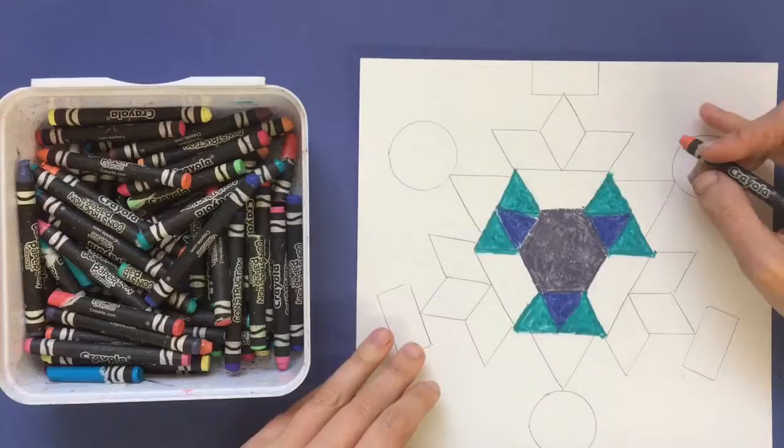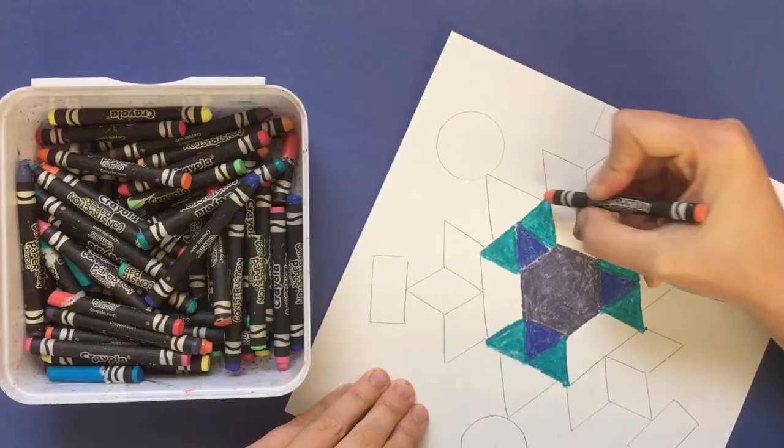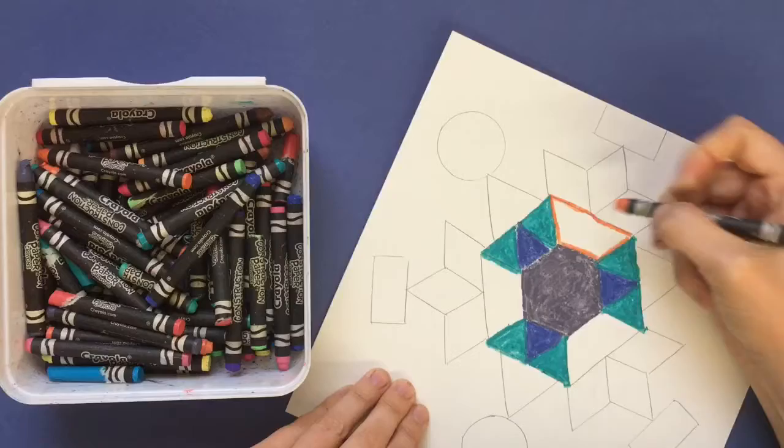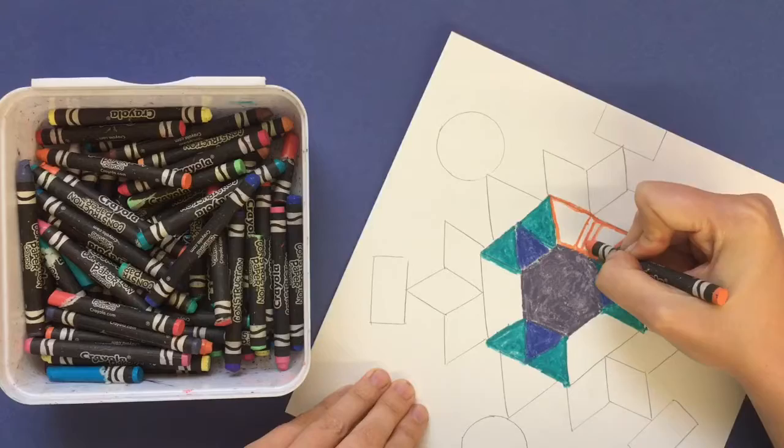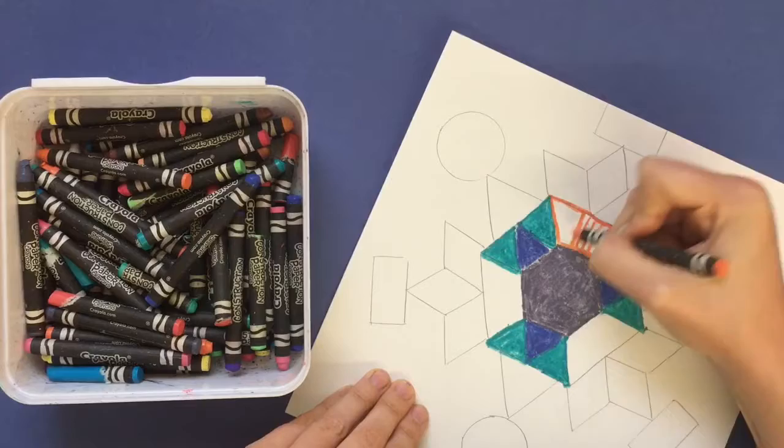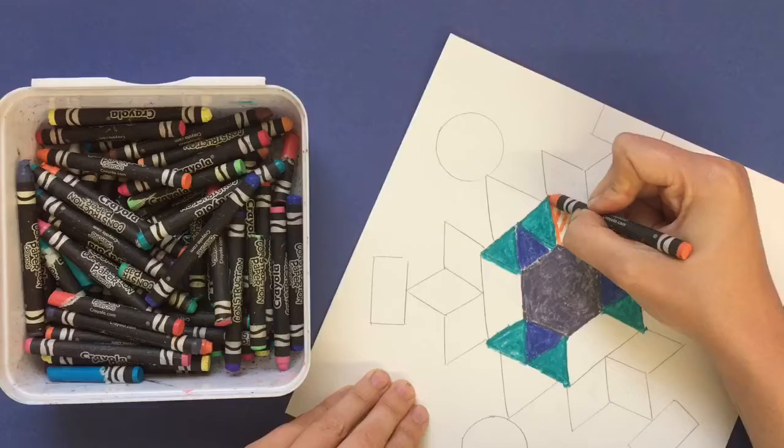You can also choose to fill in a shape using lines. As long as you press down hard, you don't have to color in the whole shape. You could do a pattern or a design of lines or circles that fill in the shape, and those lines will push through the ink, and then the spaces in between the lines will turn black when you paint it with ink.